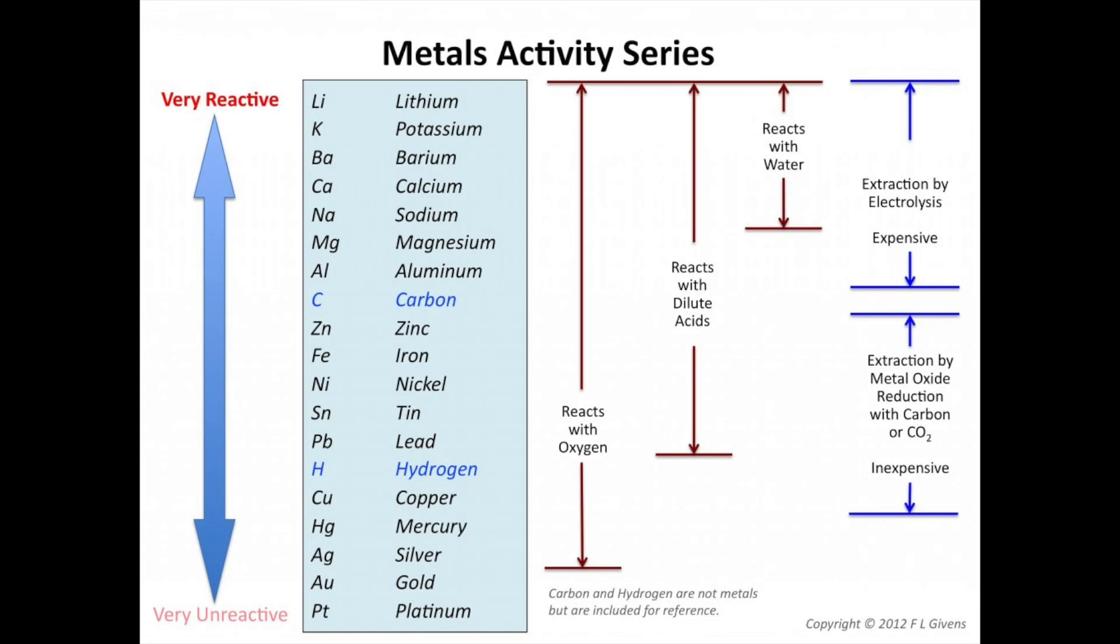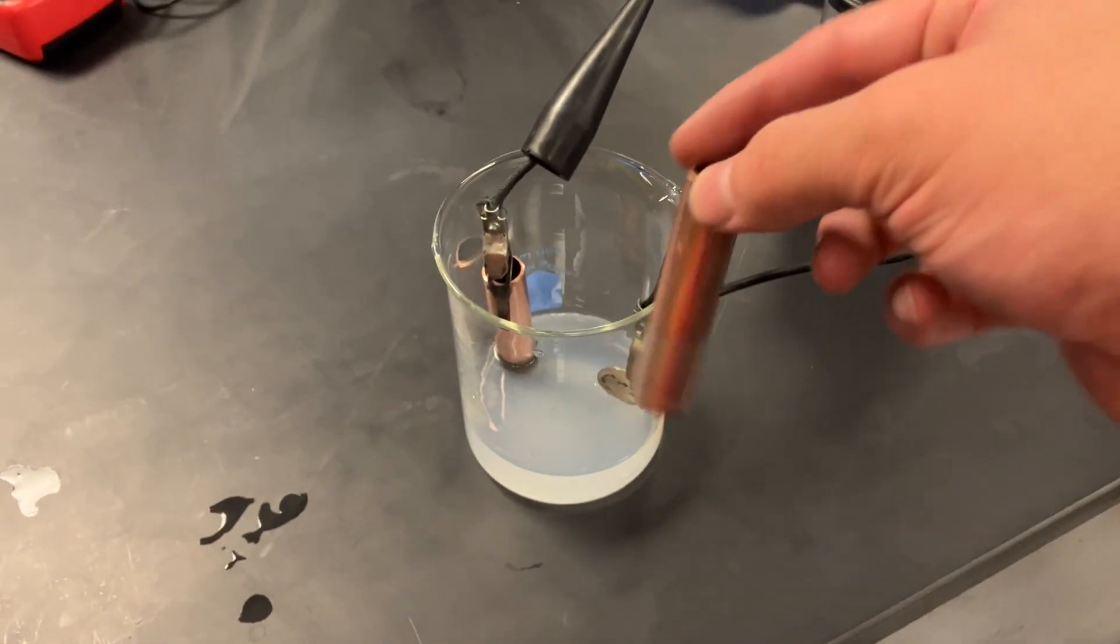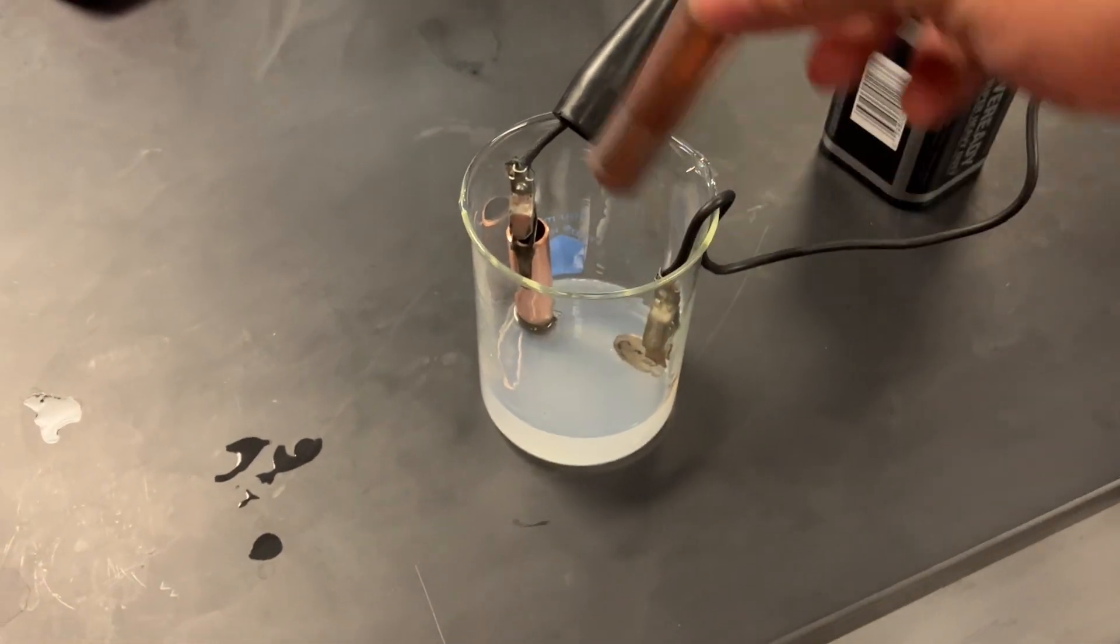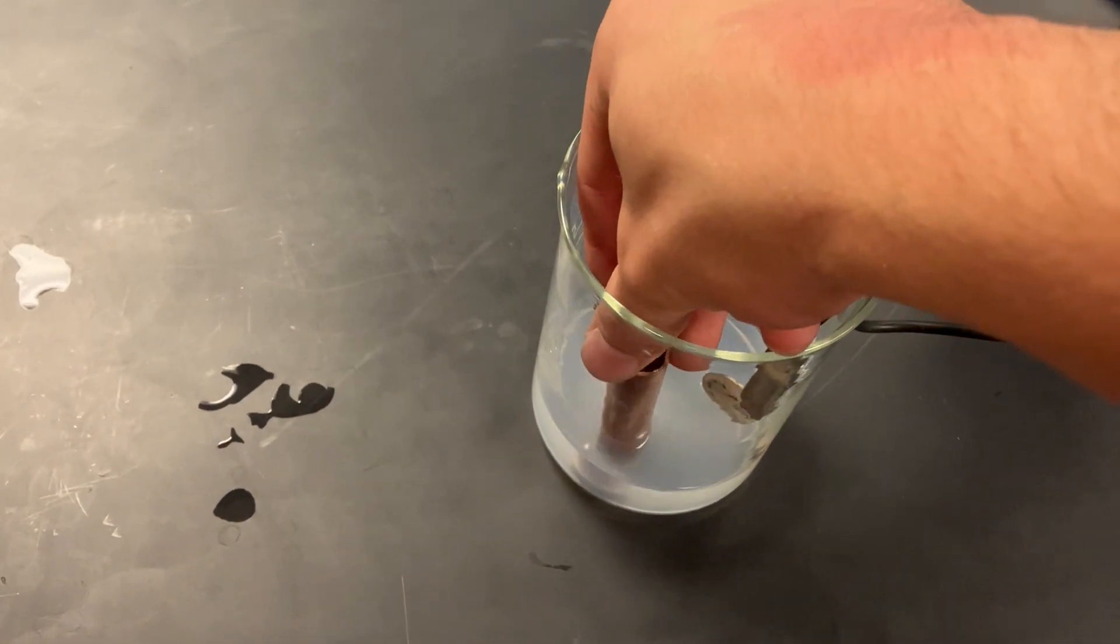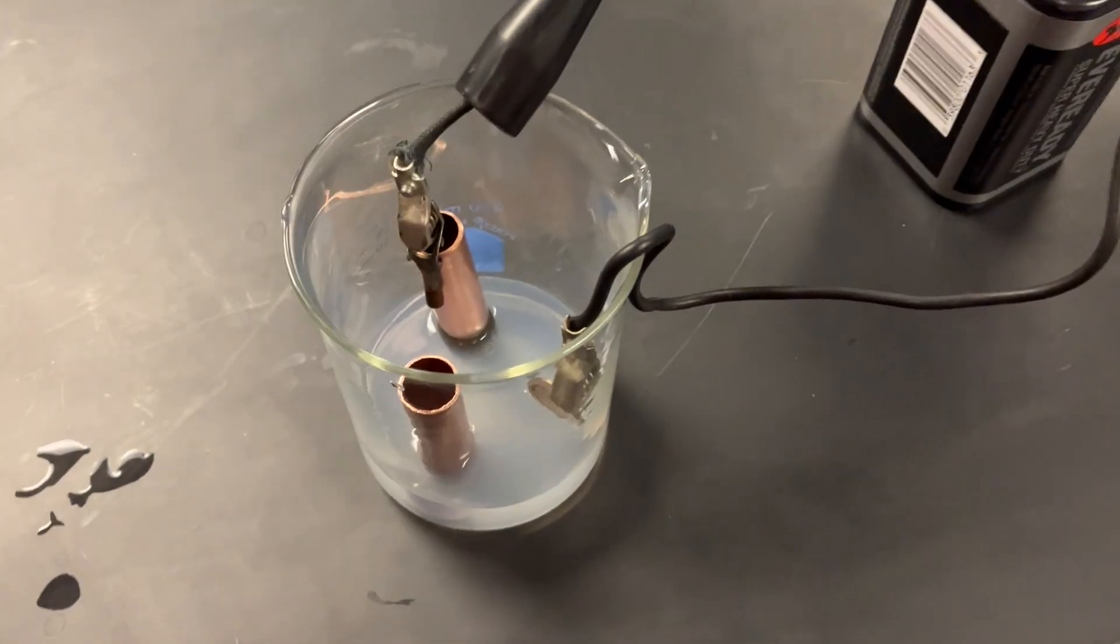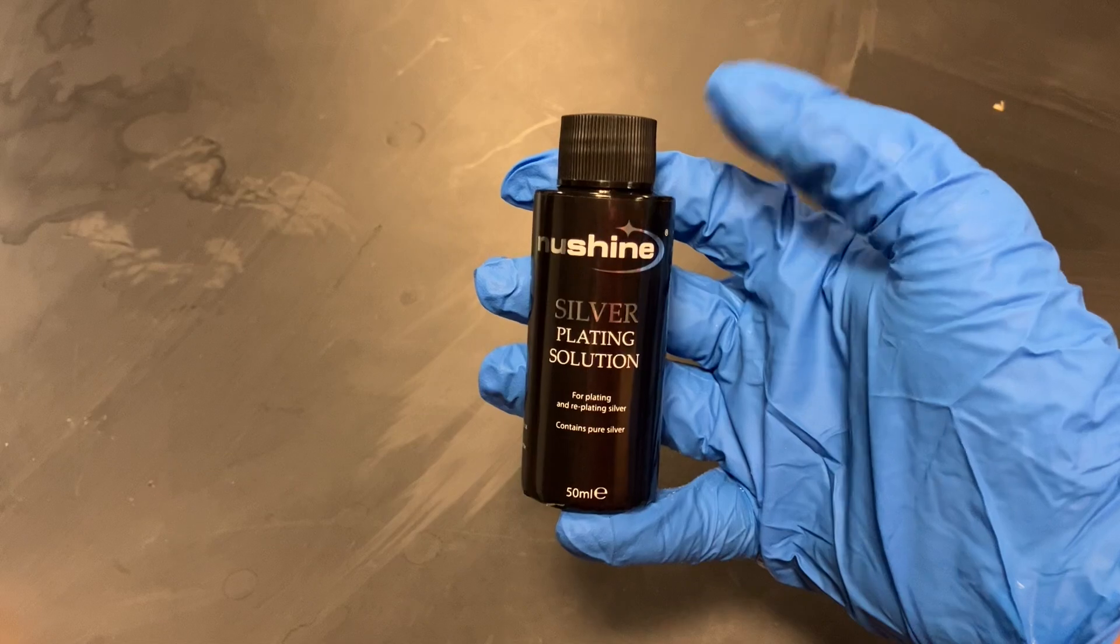Now, because copper is below silver on the metal activity series, it will naturally displace the silver ions in solution. So I added this piece of copper to the solution with no current running through it to show you the difference between a natural deposition and an electrically induced one.